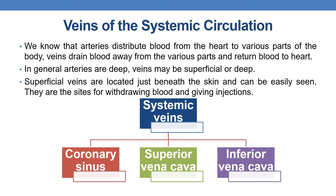Let us first discuss a brief anatomy of veins and the systemic circulation. Arteries distribute blood from the heart to various parts of the body, while veins drain blood away from the various parts of the body and return it to the heart. In general, arteries are deep, while veins may be superficial or deep.